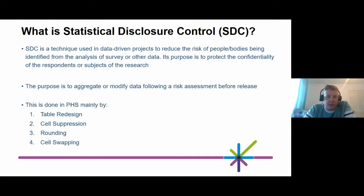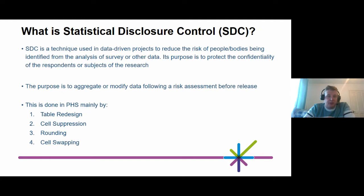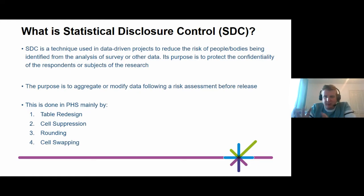In Public Health Scotland we have four main disclosure control techniques. There are many techniques out there, but our four preferred ones are: table redesign, cell suppression, rounding, and swapping. Table redesign hasn't been included in the disclosure control app because it's so unique to each dataset. However, cell suppression, rounding, and swapping are all built into the app, so analysts can now just press a few buttons and any of these techniques will be applied, with the exclusion of table redesign.